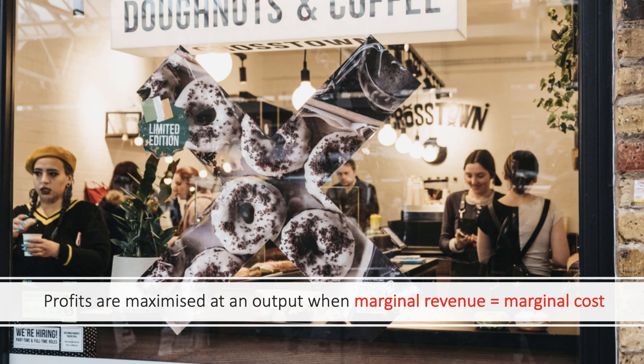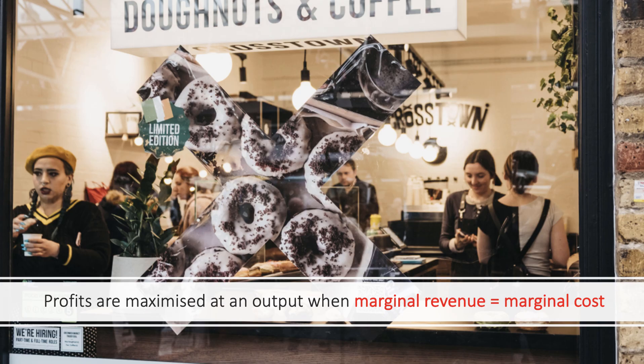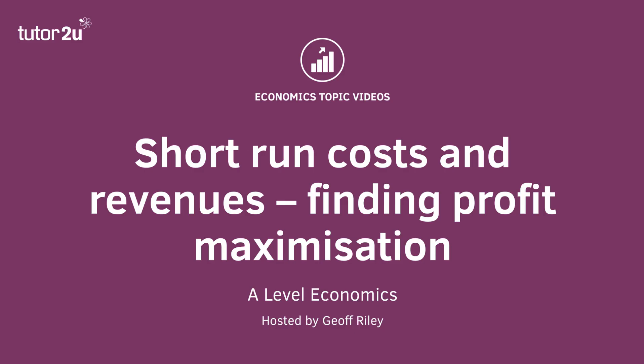This tells us that you maximize profit when marginal revenue equals marginal cost. Going back to the table, at output level 300 the marginal cost is eight pounds and the marginal revenue is eight pounds — we're not adding to profit and not losing profit; we're maximizing it. By the way, here's a picture of Crosstown Doughnuts in London — a great emerging brand. That's a quick overview on short run costs and revenues and finding the profit maximizing point.